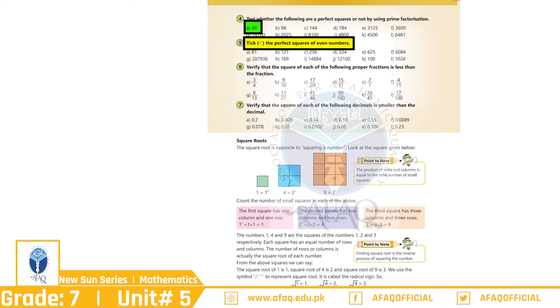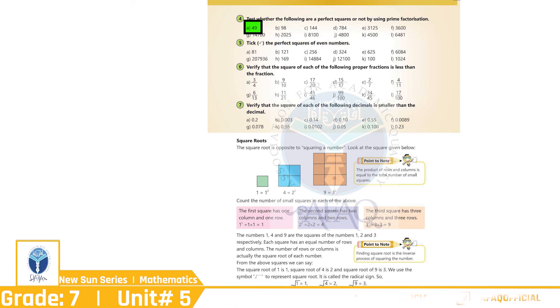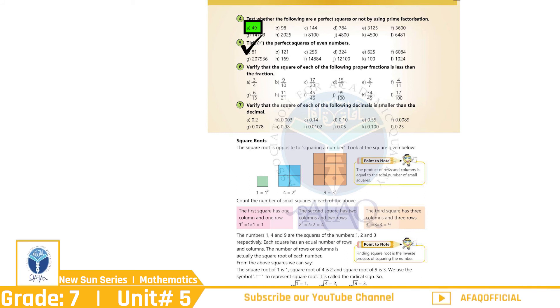Question No. 5: Tick the perfect squares of even numbers. A. 81 — Tick. اسی طرح سے اگلے سوال آپ نے خود حل کرنے ہیں۔